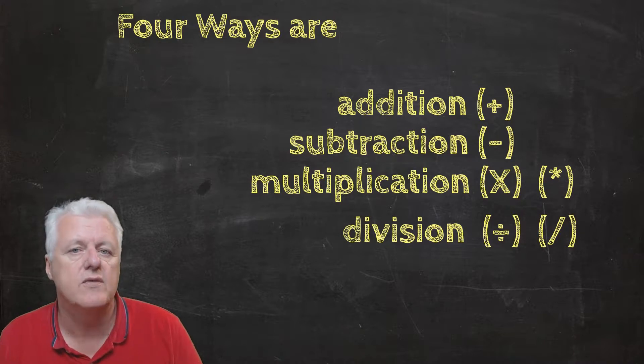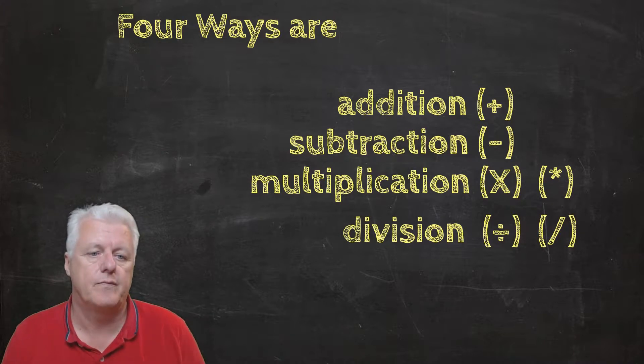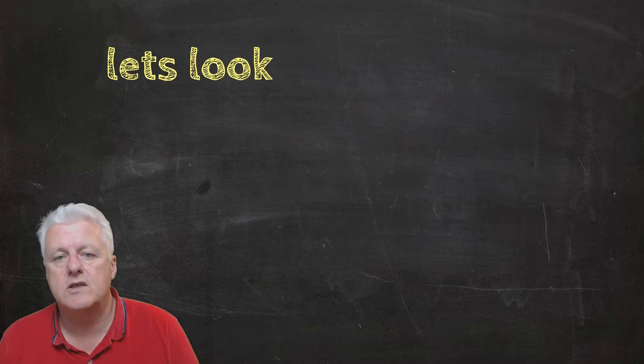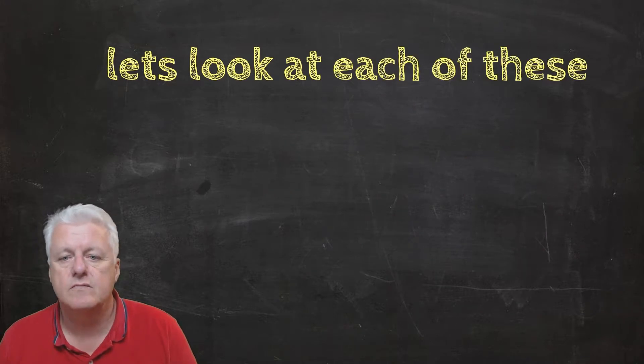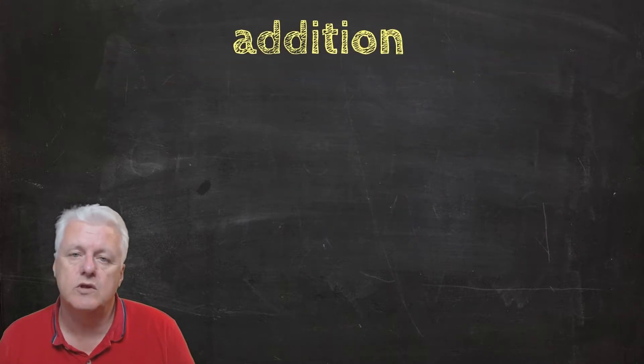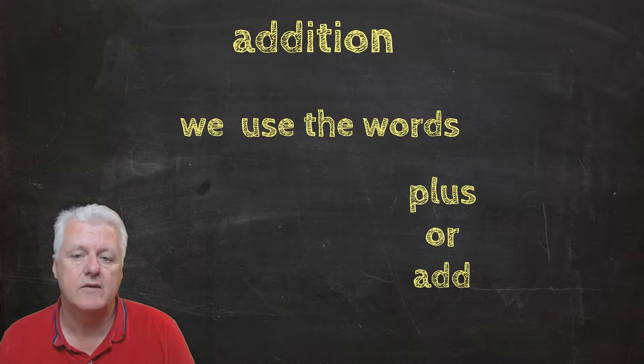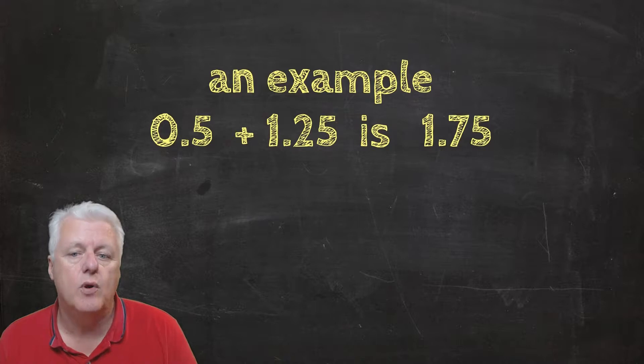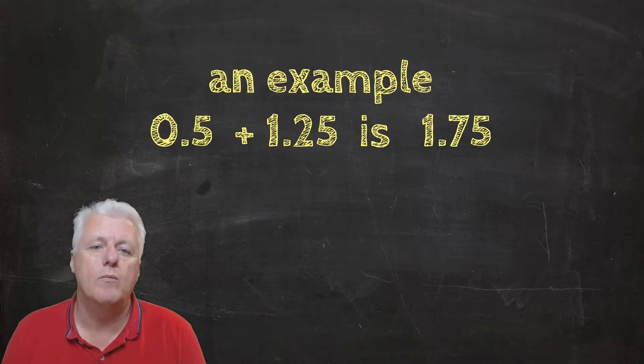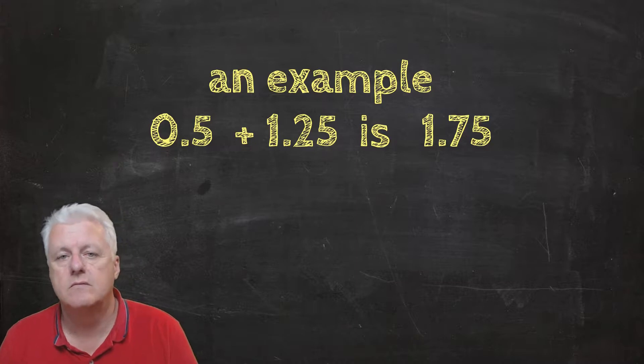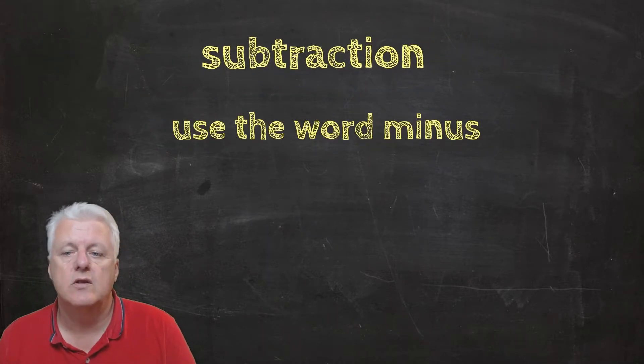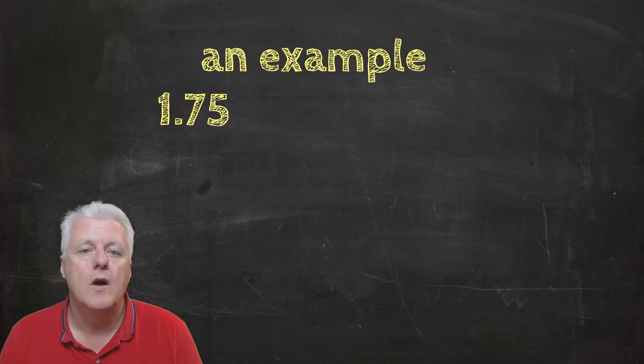Let's look at each of these. In addition we use the words plus or add. An example: 0.5 plus 1.25 is 1.75. In subtraction we use the word minus. An example: 1.75 minus 0.5 is 1.25.